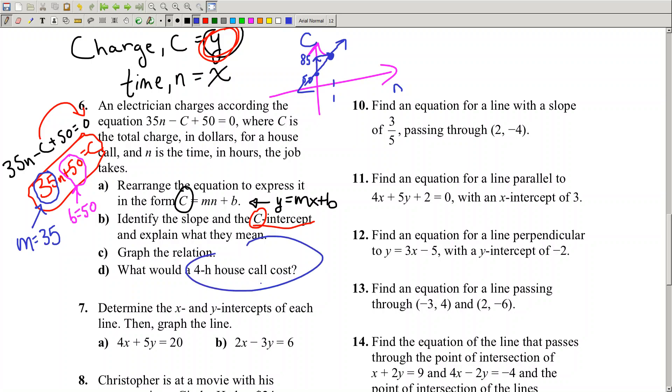What would a four-hour call cost? Well, that's easy. You pay $50 no matter what. And then $35 for every hour, but then it's four hours. $35 by 4 is $70 by 2, which is $140. So this is equal to $140 plus $50. You pay a total of $190. That's it.